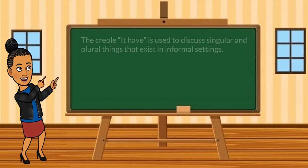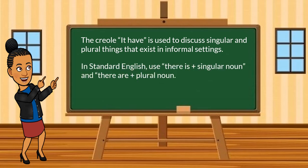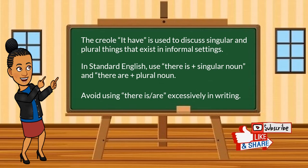So what have we learned? The Creole "it have" is used to discuss singular and plural things that exist in informal settings. In Standard English, use "there is" plus a singular noun and "there are" plus a plural noun. But avoid using "there is" and "there are" excessively in writing. Thank you so much for watching. Consider hitting the subscribe button so you'll never miss out on another adventure. Please like and share this video. Until next time, happy writing.